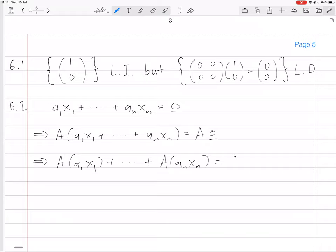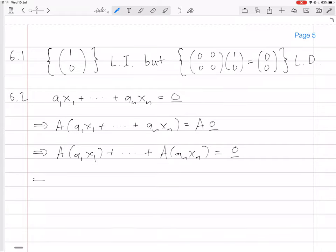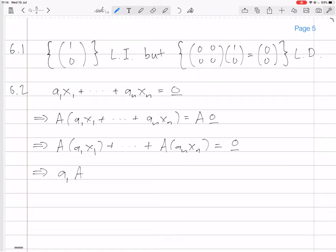And anything times the zero vector is a zero vector. Now a is linear, so it preserves, respects scalar multiplication, so you can bring out the scalars in each case.